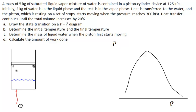In this problem we've got a mass of 5 kilograms of liquid and vapor in equilibrium in a piston-cylinder device. The piston has a weight that induces a pressure of 300 kilopascal. Heat is added to the system; we've got 2 kilograms of liquid water and 3 kilograms of water vapor. Once the pressure reaches 300 kilopascal the piston moves upward, and heat transfer continues until the second volume is 20% greater than the original volume.